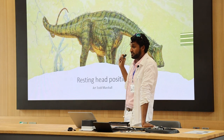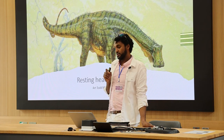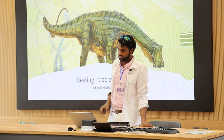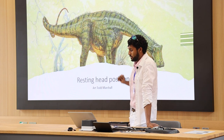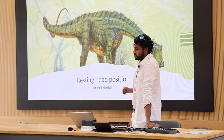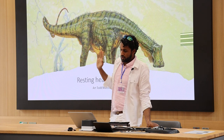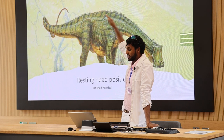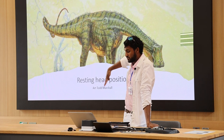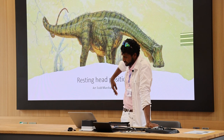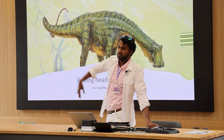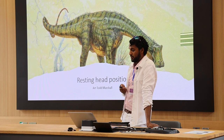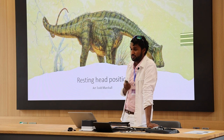We also have the resting head position from the inner ear, which provides really interesting information. A dinosaur called Nigersaurus niger in Africa — unlike many sauropods which held their head horizontal or vertical — actually had its head down like a lawnmower. It had about 500 teeth and would literally lawnmower up the vegetation, which would have been ferns, and very rarely lifted its head. That was quite an unusual evolutionary trait for this group of dinosaurs.